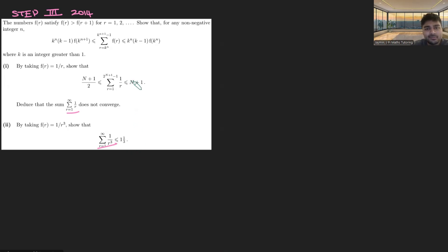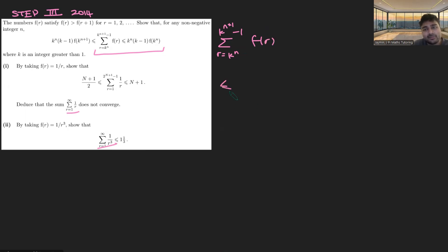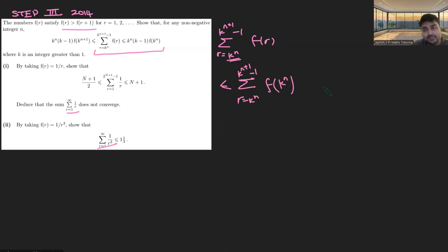We're going to dive straight in. I'm just going to show the upper bound of this inequality — the lower bound is very similar. So the sum from r = k^n up to k^(n+1) − 1 of f(r): we want to see what upper bound we can give. Since f is a decreasing function, the biggest value it can take on this interval is at the lower bound k^n. So this is less than or equal to the sum of just f(k^n), which is a constant, multiplied by the number of terms: k^(n+1) − k^n. Factoring out k^n gives k^n(k−1)·f(k^n), our upper bound.